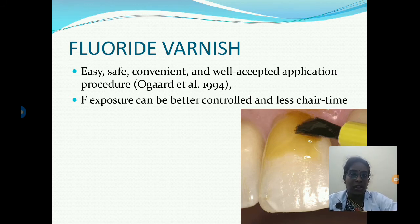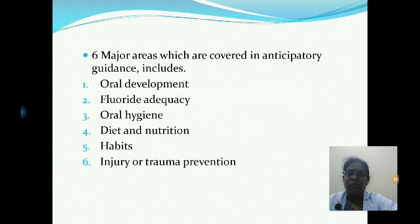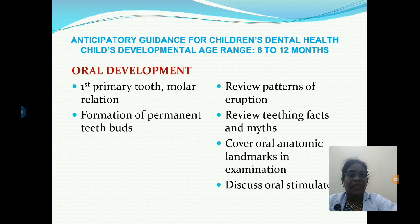Anticipatory guidance is a proactive, developmentally based counseling technique that focuses on the needs of the child at each stage of life, as given by Nowak in 1995. It involves six major areas: oral development, fluoride adequacy, oral hygiene, diet and nutrition habits, and injury or trauma prevention. The anticipatory guidance for the age group six to twelve months covers these areas.